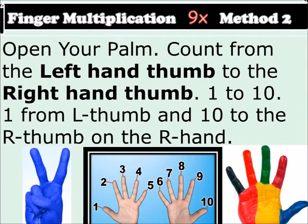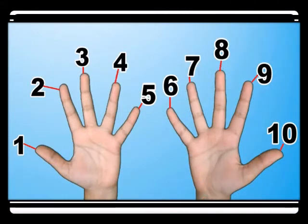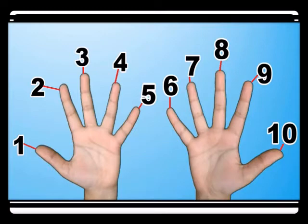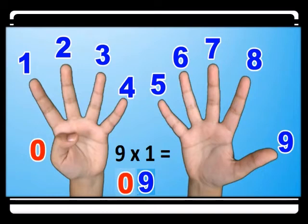Open both your palms facing you. Come from the left-hand thumb to the right-hand thumb — so one to ten. You get one to ten: one, two, three, four, five, six, seven, eight, nine, ten. The left thumb is one and the right thumb is ten. So for nine times one, you bend the first finger — the thumb. Before the thumb you have nothing, and after the thumb you have nine fingers, so the answer is zero nine, that is nine.